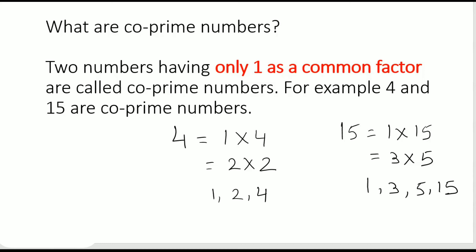Now let's see the common factors. The common factors are 1 and 1. There are no more common factors. Hence, 4 and 15 are co-prime numbers.